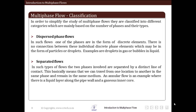Let us first have a look at dispersed phase flow. In such flows, one of the phases are in the form of discrete elements. But we do not see any connection between these individual discrete phase elements which may be in the form of particles or droplets. Example of such type of flow is gas or bubbles in liquid.